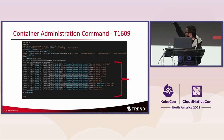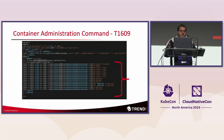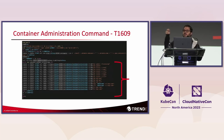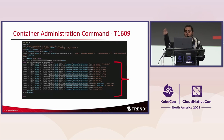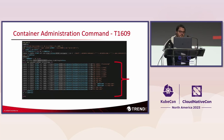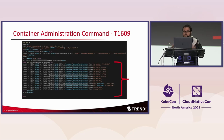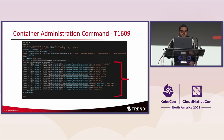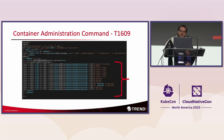All these curl requests loop through each container running on the node. They're executing commands that basically update packages, install tools like bash, curl, and wget — and then at the end, run their crypto miners. There are two binaries they deployed to run their cryptocurrency miners.